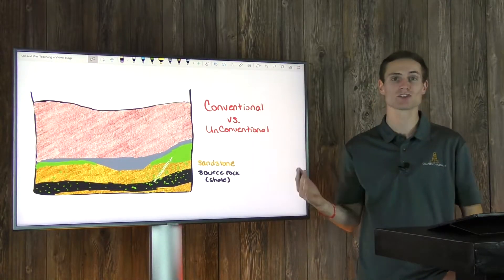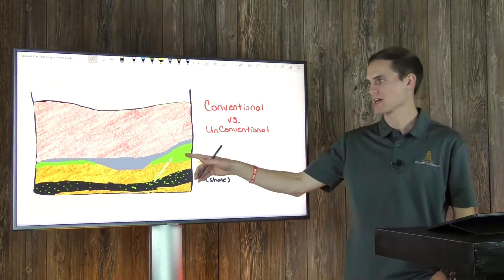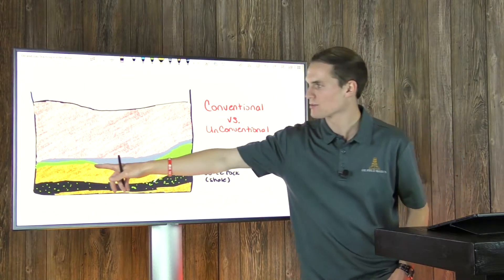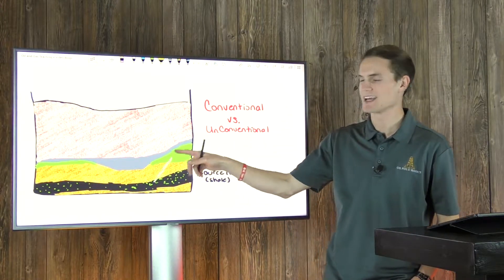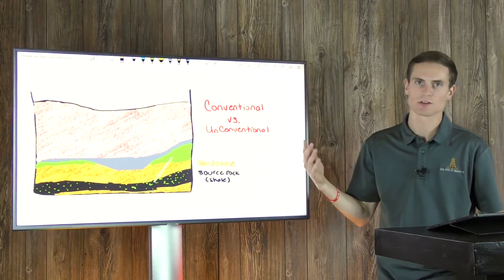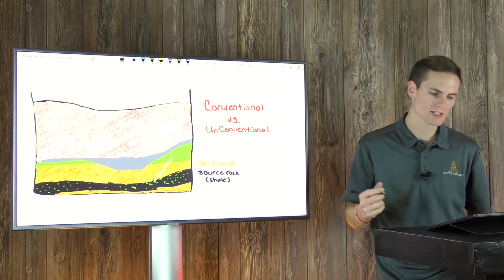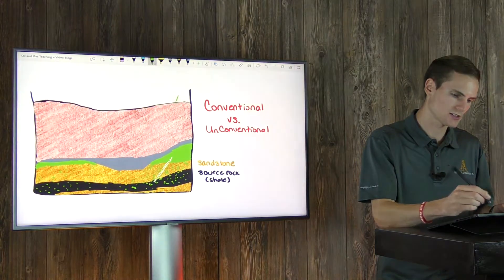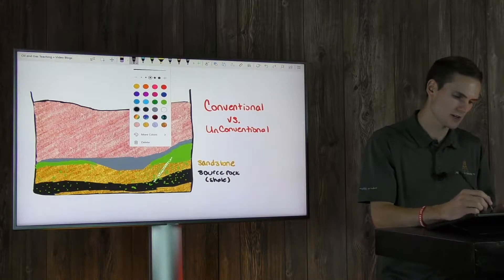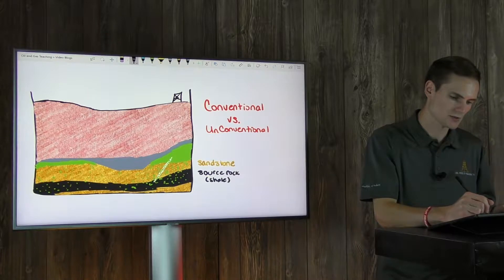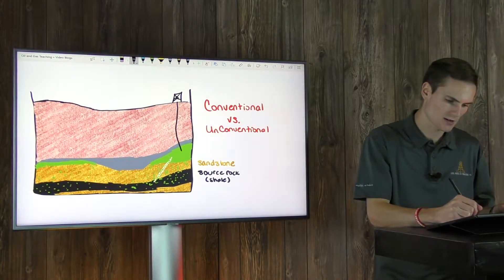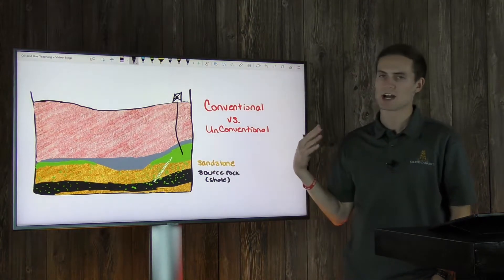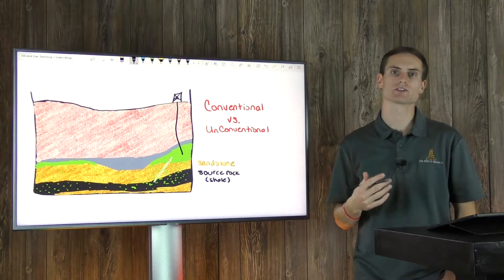Now let's talk about conventional versus unconventional reservoirs. Whenever we find hydrocarbons trapped within a rock and we target that, we call it a reservoir. You can see there's a strong buildup on both higher ends where the sandstone dips upwards — we call that an anticline. Hydrocarbons are trapped there. If we drill a well from surface down into that reservoir, it has migrated from the source rock into the sandstone. We're targeting something that is not the source rock itself, so we call that a conventional well or conventional reservoir.